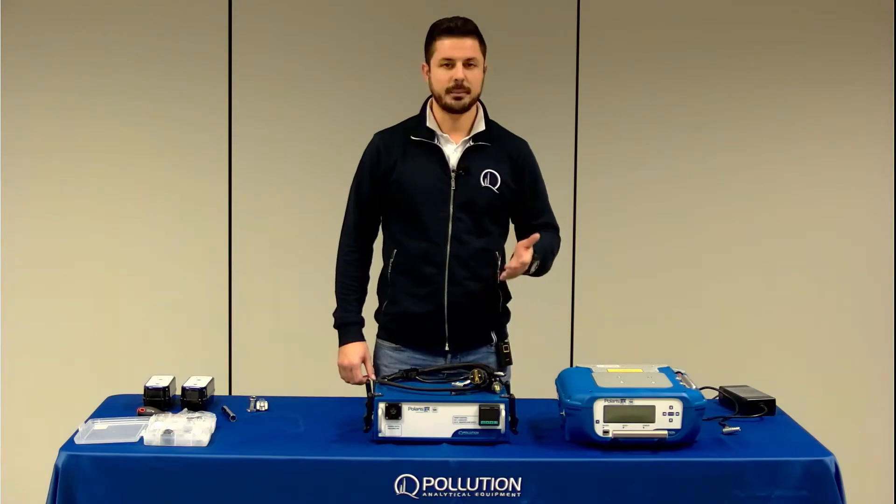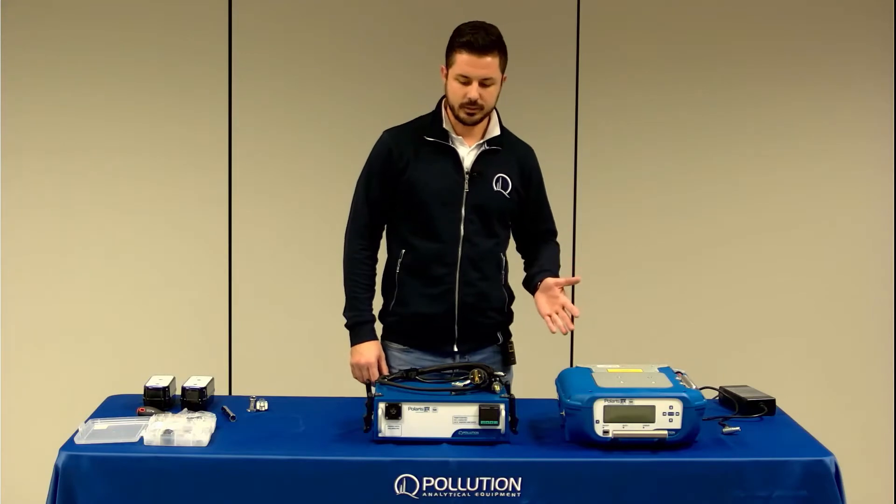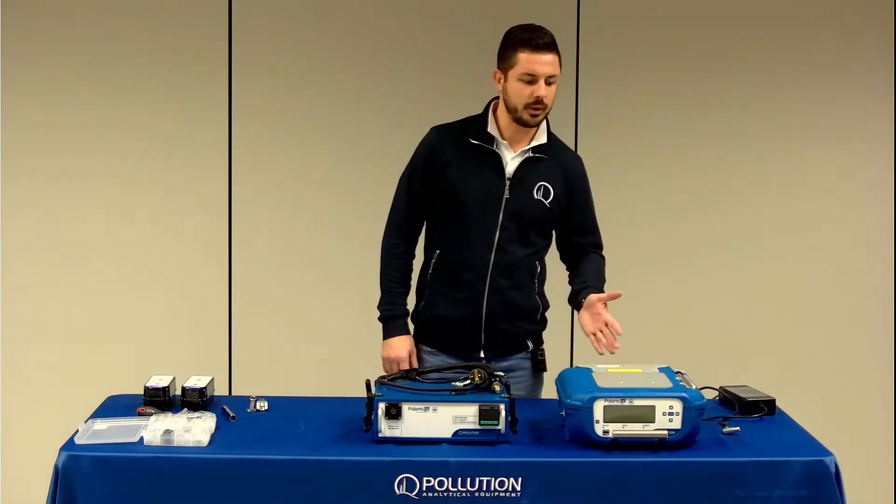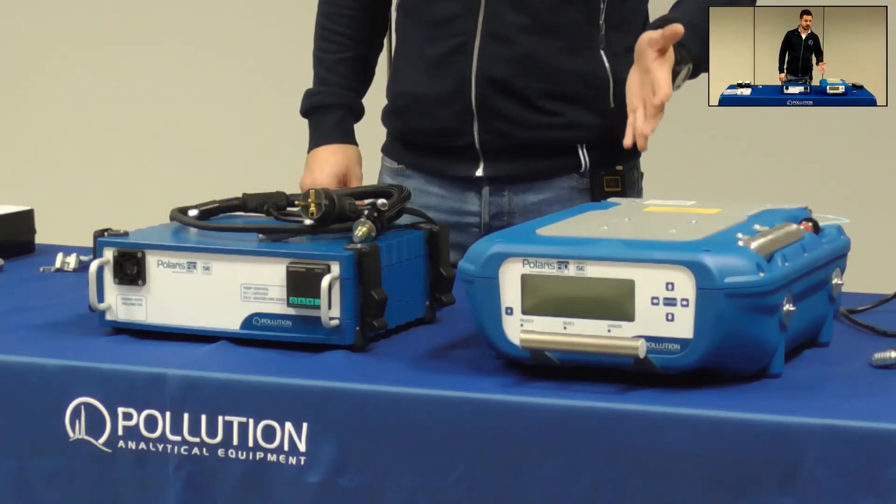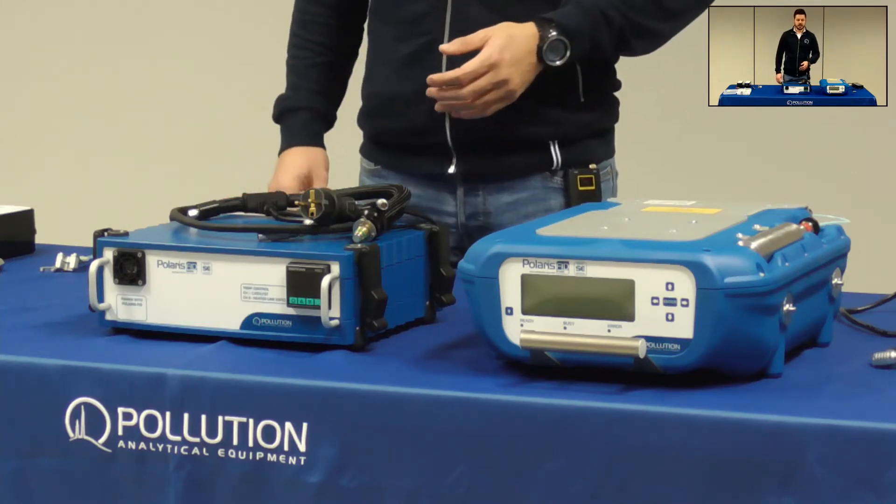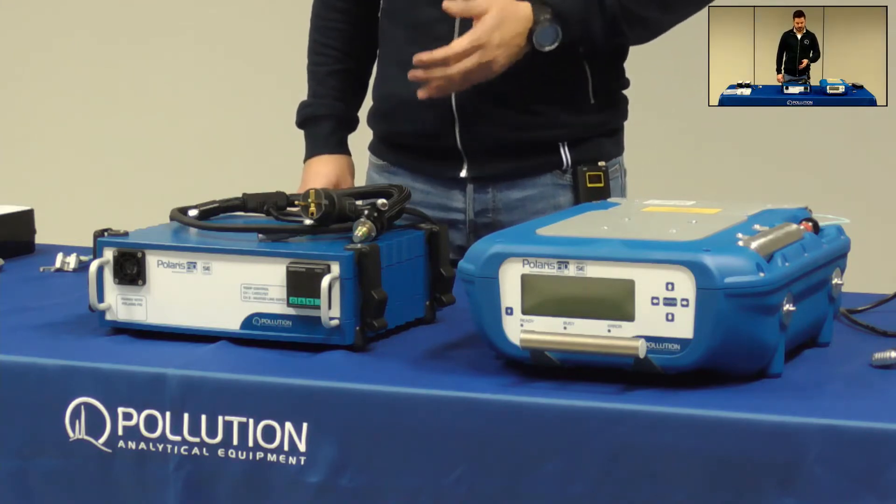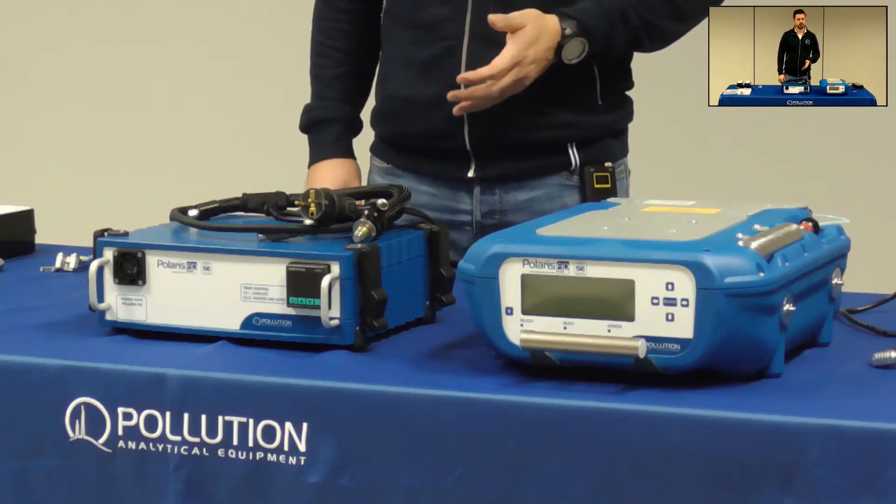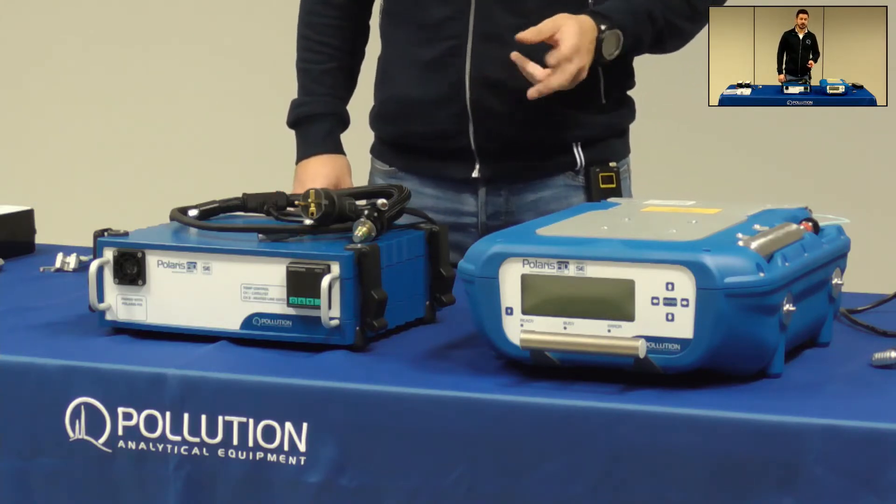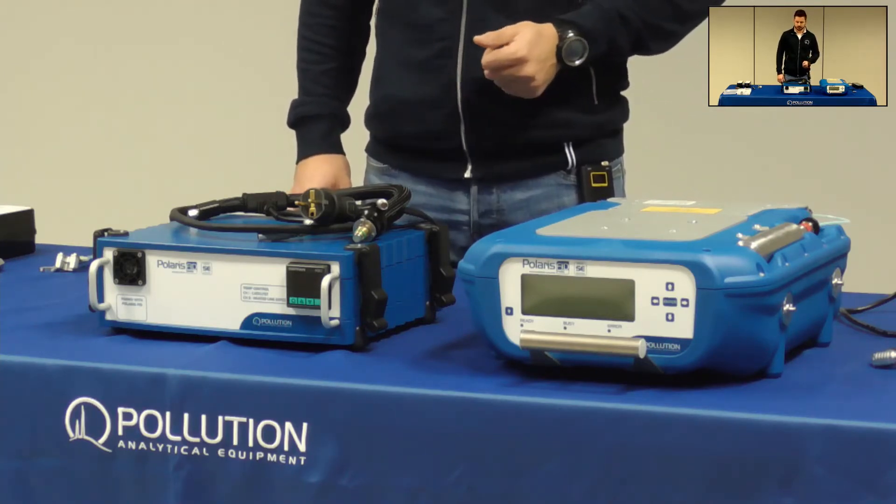The docking station will allow you to discriminate between methane and non-methane hydrocarbons, thanks to its internal oxidizing catalyst. The gas sample will enter the docking station and the catalyst will oxidize all VOCs but methane. So on the first run the FID will give you only the methane signal. On the second run the gas sample bypasses the catalyst and the FID will quantify the total VOCs. Polaris will automatically calculate the difference between methane and non-methane VOCs.